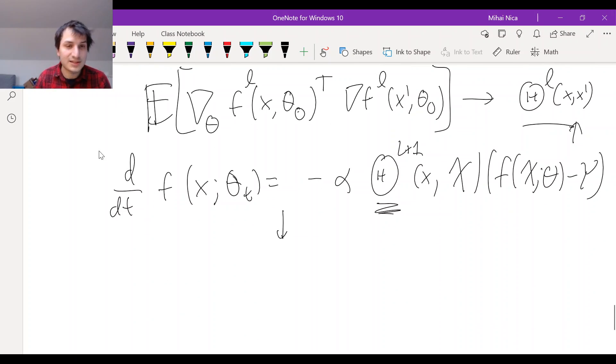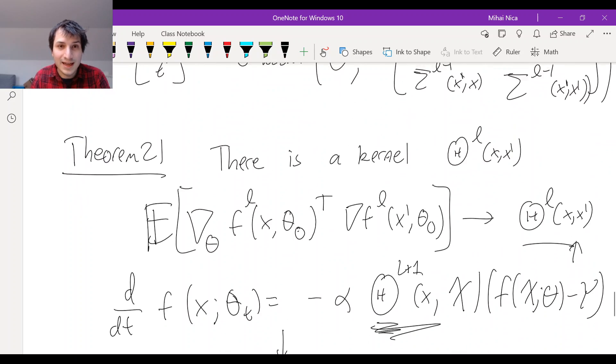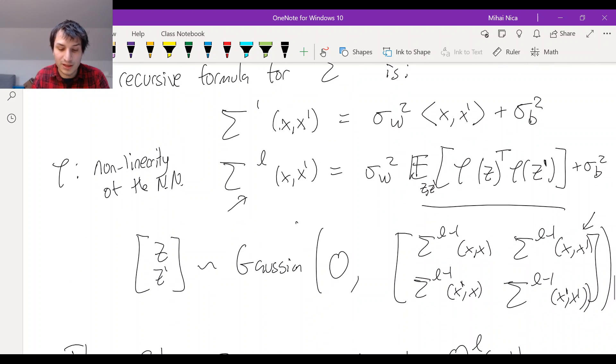Just like we did before, you can write down the exact solution. You can write down f of x, theta infinity, et cetera. So anything you can do in the linear case, you can do it now using the neural tangent kernel. So I should tell you how the neural tangent kernel evolves now, so you can figure out a formula for it. And it's extremely similar to this formula for the NNGP kernel. And in fact, it depends on the NNGP kernel.